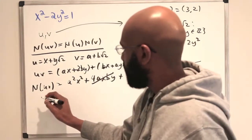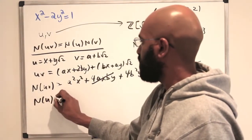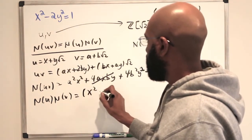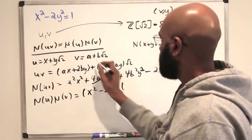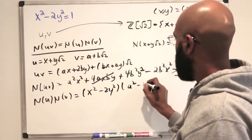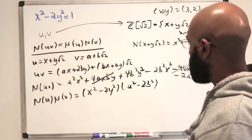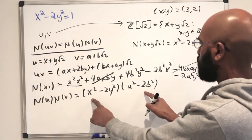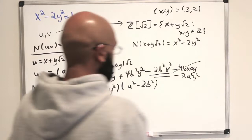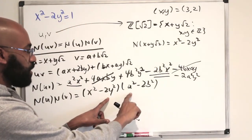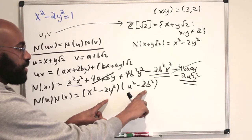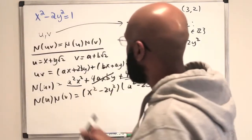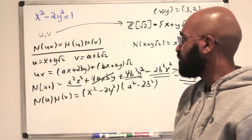Now let's compare this with the norm of u times the norm of v. The norm of u times the norm of v is the quantity (x² minus 2y²) times the quantity (a² minus 2b²). Expanding this gives a²x² minus 2b²x² minus 2y²a² plus 4b²y², which matches exactly. So indeed, the norm of uv equals the norm of u times the norm of v.